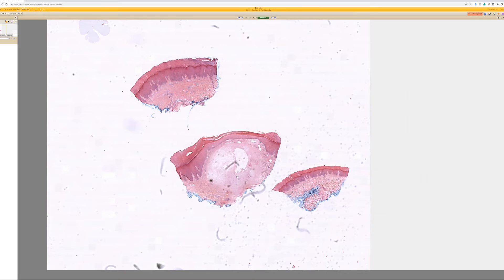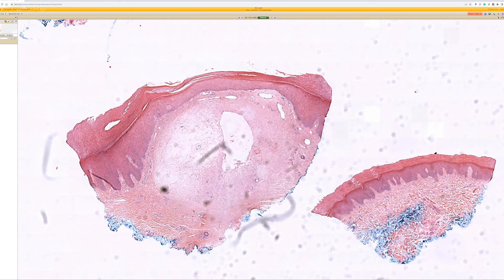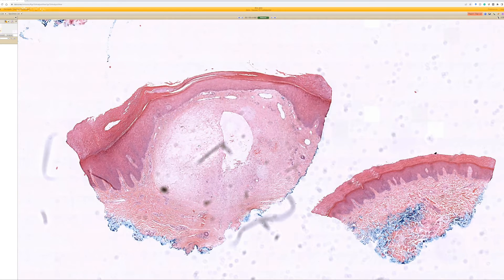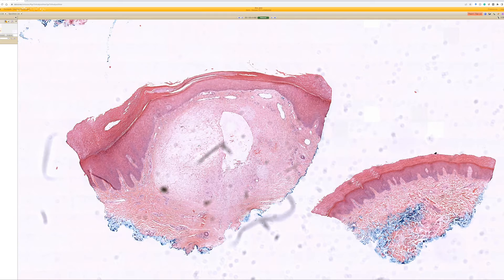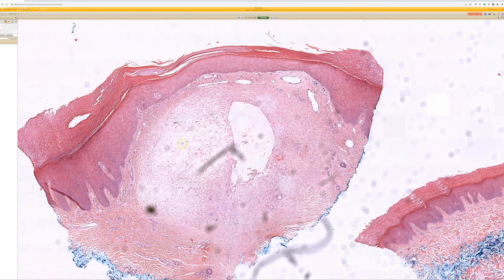All right, first glance, really thick and compact stratum corneum, so likely on an acral site. And especially in this left piece here, you can see this cleared out area. It kind of looks to be cystic.